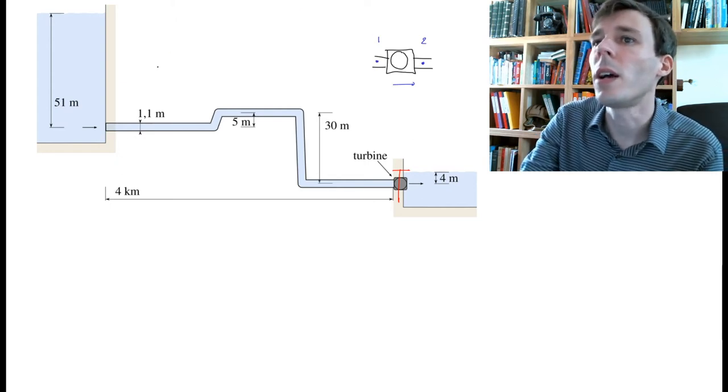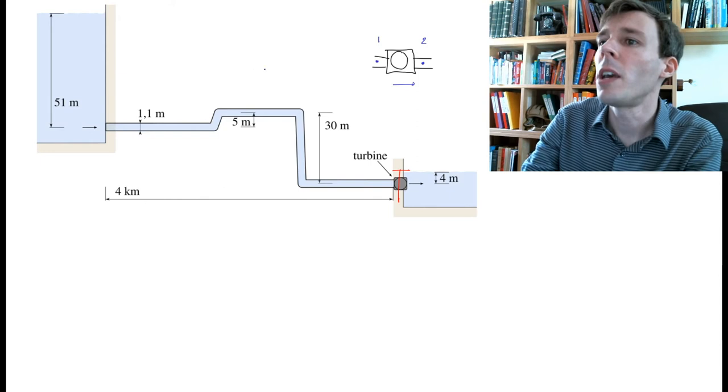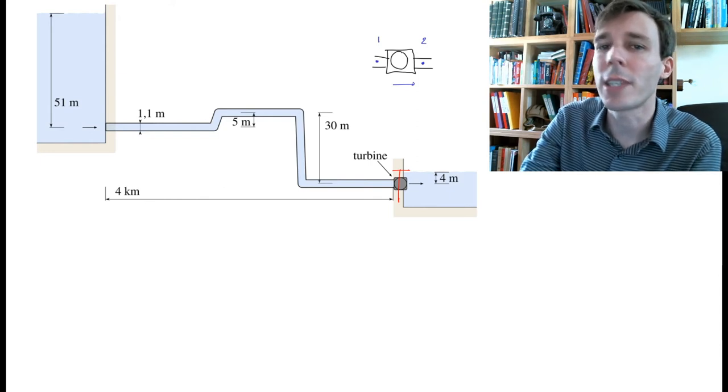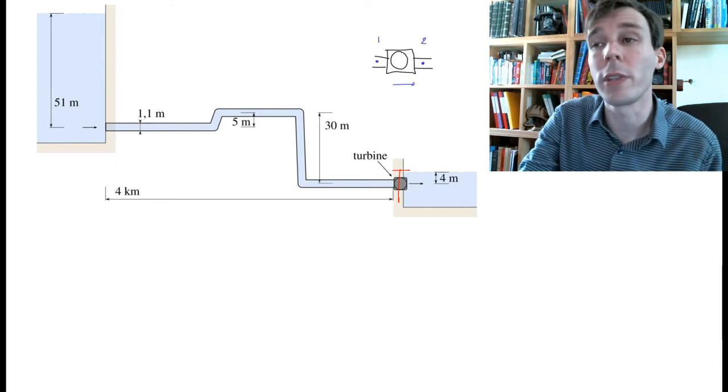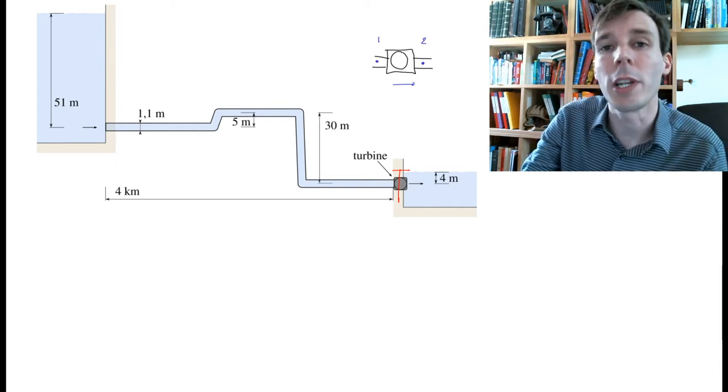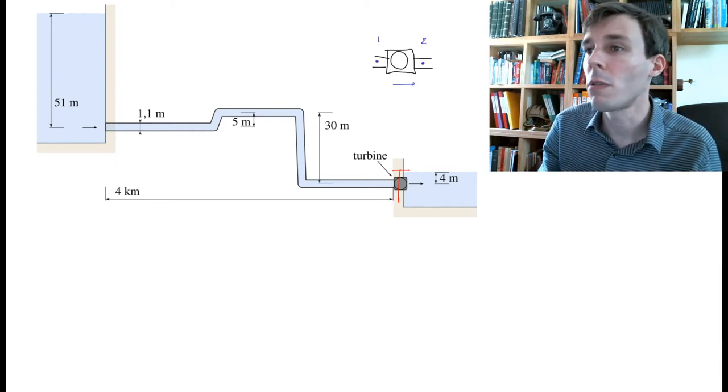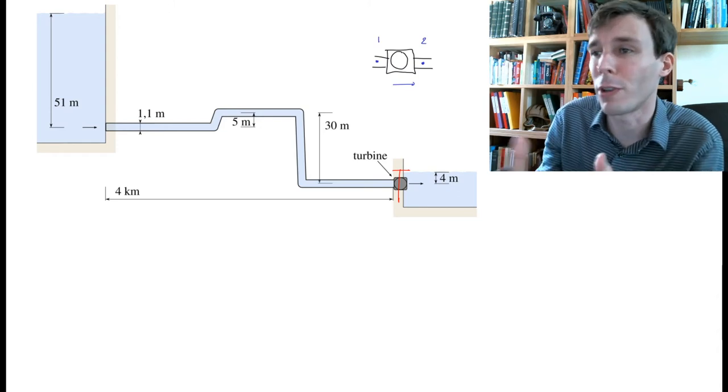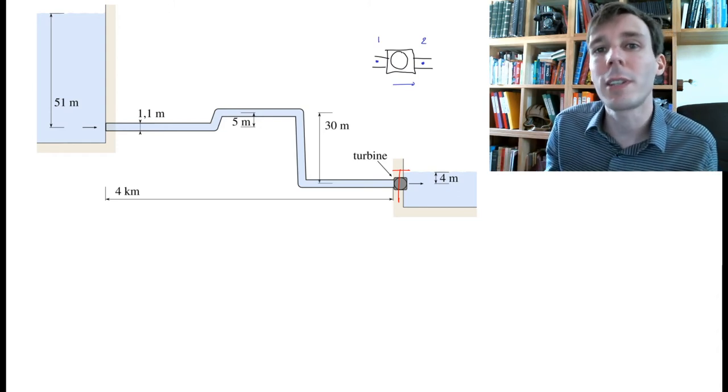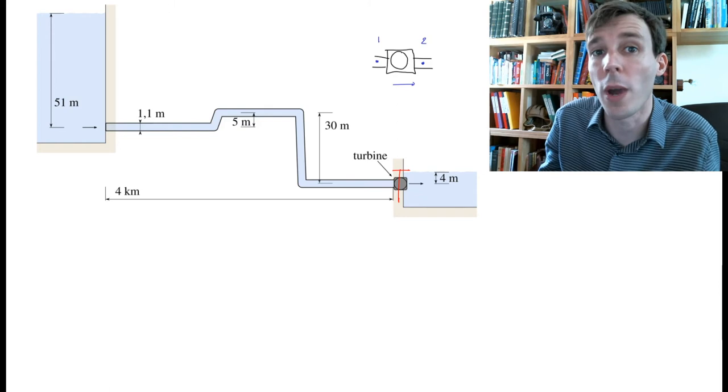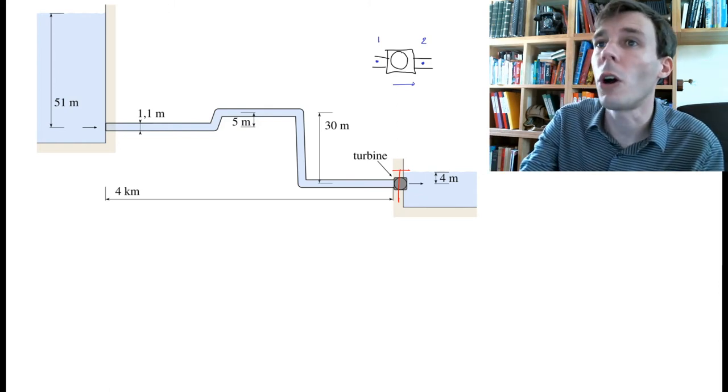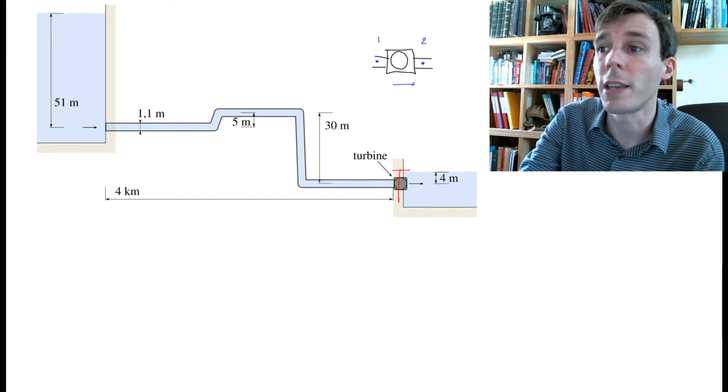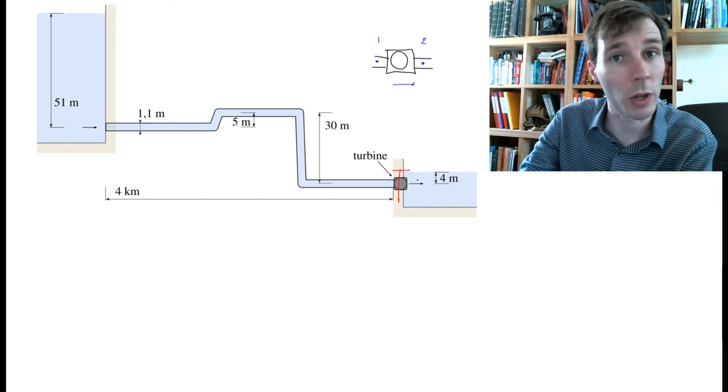It's an easy calculation. We want to see on each of the two sides of the turbine how far away we are from the free surface. Because you will remember, in a static fluid when there is no movement, pressure is only dictated by altitude - by how far away each point is from the free surface. So all we have to calculate is how far point 2 and point 1 are from the surface.